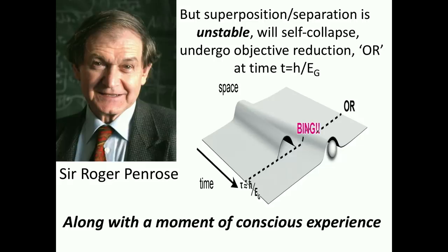But Roger Penrose suggested that these superpositions and separations in space-time geometry are unstable, and they will self-collapse or undergo objective reduction due to an objective threshold at a time t given by a very simple equation, basically a form of the indeterminacy or uncertainty principle, where the time t is h-bar over e sub g, where e is the gravitational energy of separating the space-time from itself or the mass from itself. And, and here was the kicker, along with a moment of conscious experience.